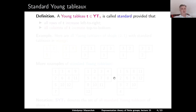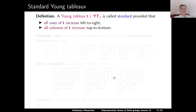A Young Tableau t of shape lambda is called standard provided that all rows of t increase left to right, and all columns of t increase top to bottom.